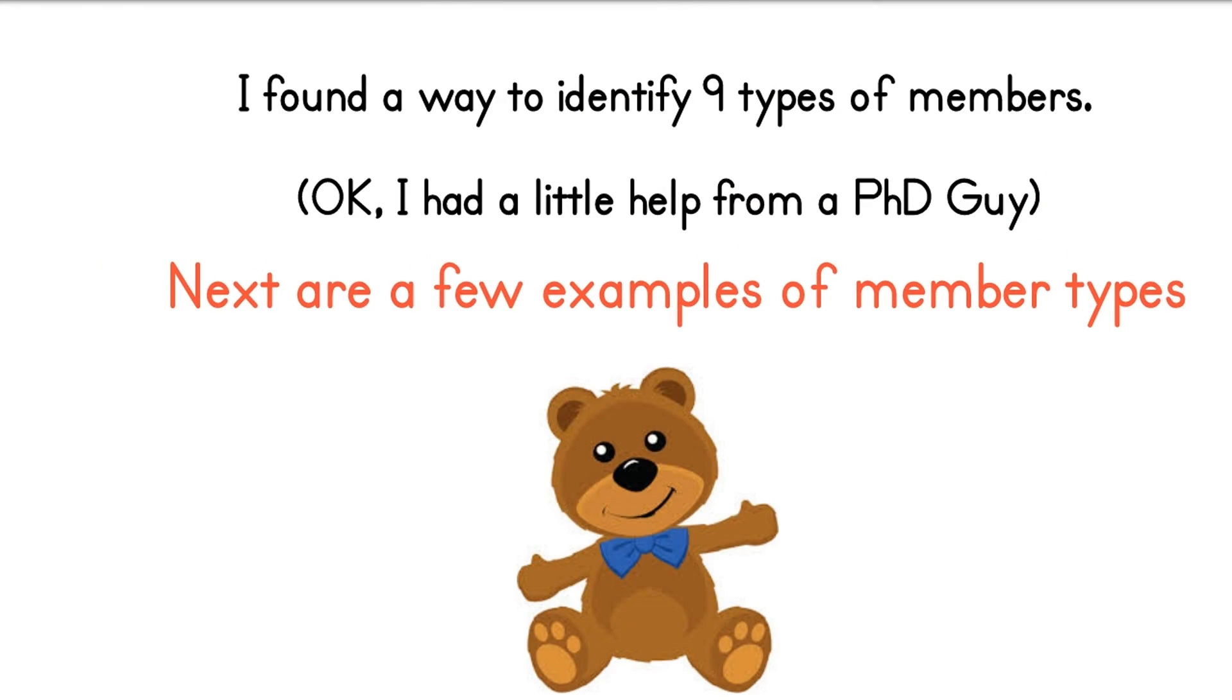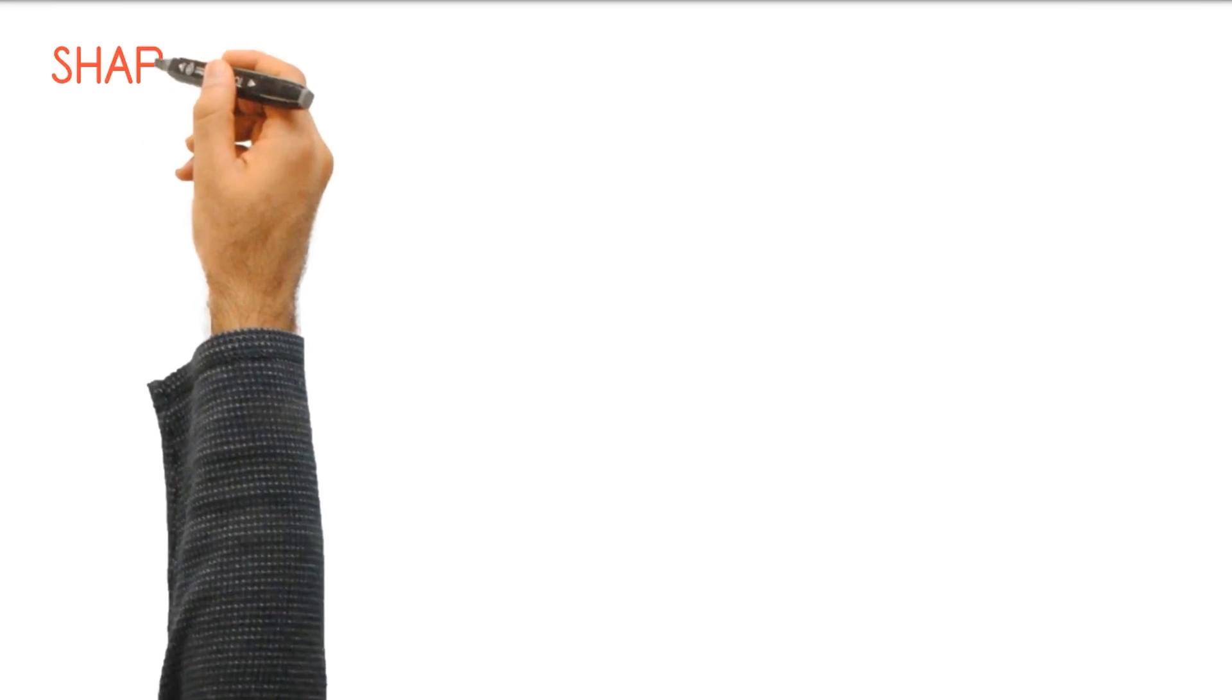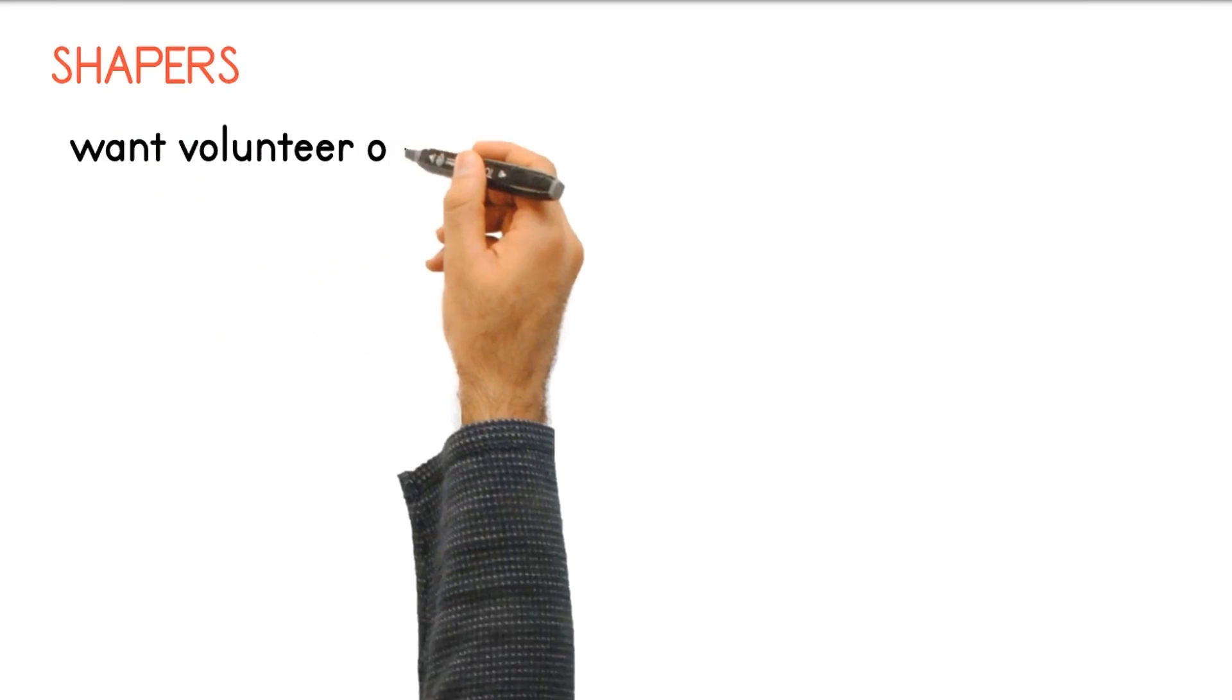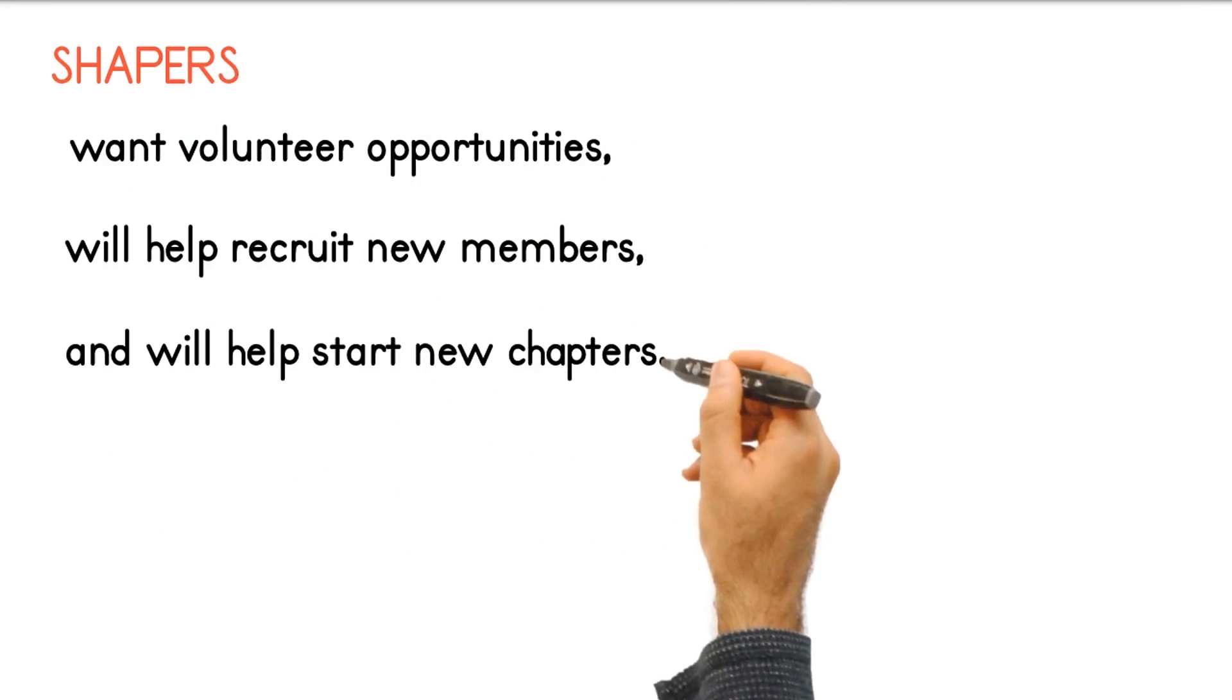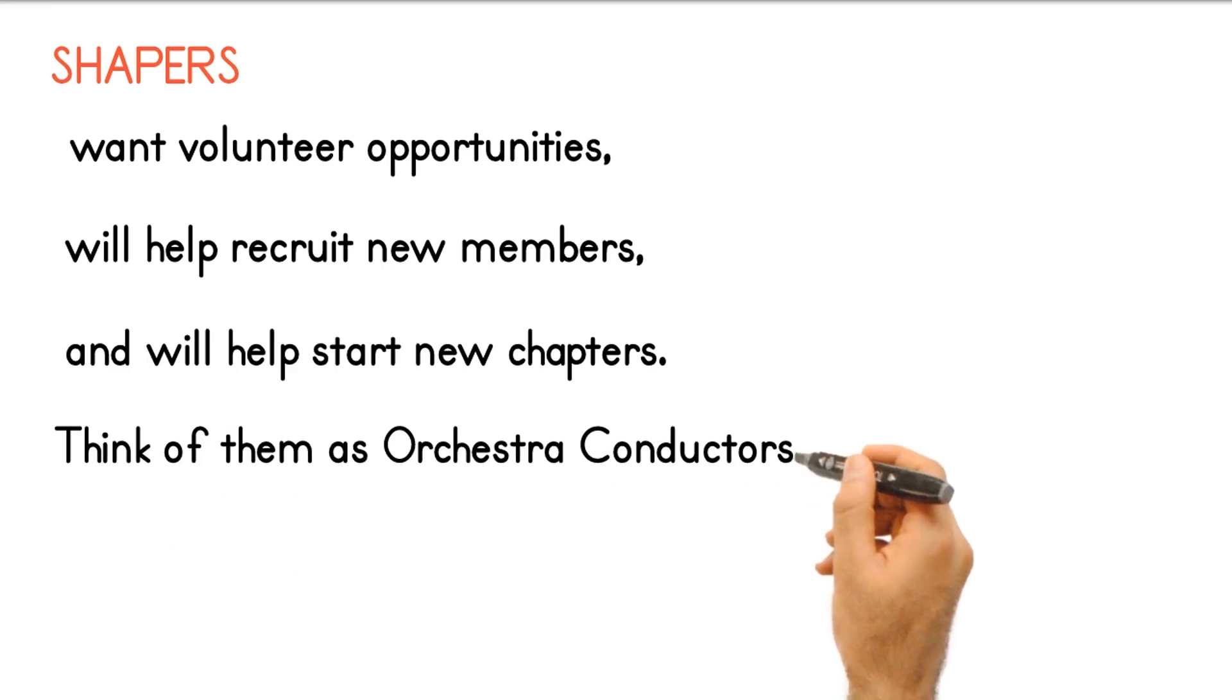Next are a few examples of member types. Shapers want volunteer opportunities, will help recruit new members, and will help start new chapters. Think of them as orchestra conductors.